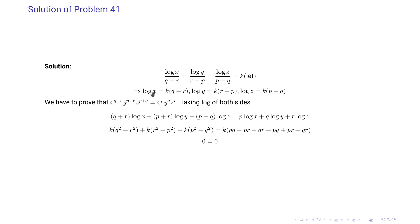Now we substitute the values of log x, log y, and log z. On the left hand side we obtain k(q² minus r²) plus k(r² minus p²) plus k(p² minus q²), and on the right hand side we obtain k(pq minus pr plus qr minus pq plus pr minus qr). Both sides evaluate to 0 and thus they are equal.